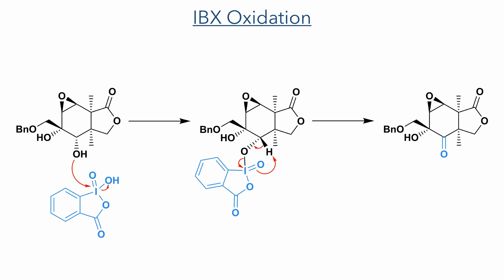Moving forward, the hydroxyl group revealed by the hydrolysis of the acetate was then oxidised using IBX. A bond is formed between the secondary alcohol and the iodine centre of the IBX reagent, which increases its electrophilicity, allowing the abstraction of the geminal proton to form a ketone.